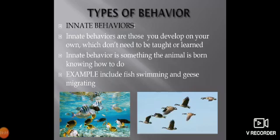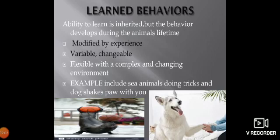Examples of innate behavior include fish swimming, geese migrating, an infant crying for food, and a child creeping at the age of eight or nine months after birth without any learning or experience. Another example is female bees placing eggs in the comb and collecting larvae for food for their young, closing the comb, and then dying — all without any learning or prior experience.